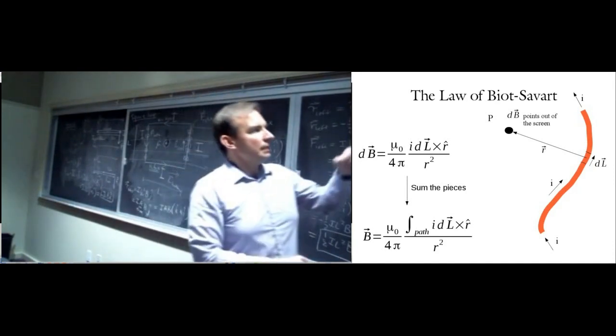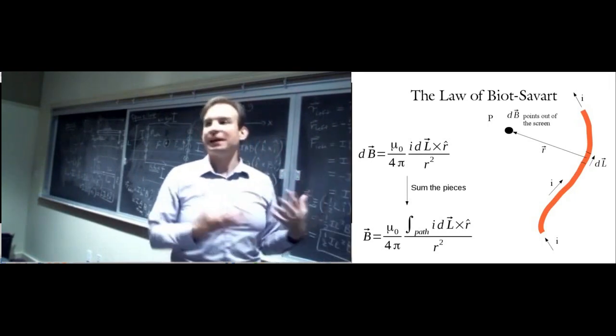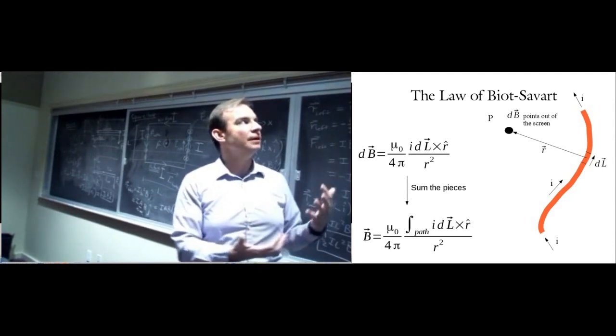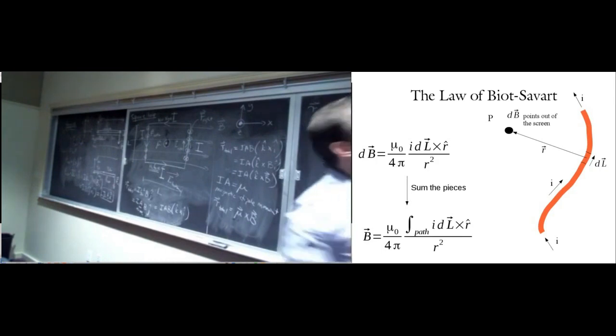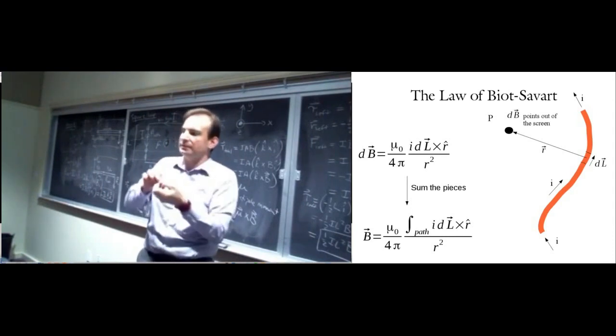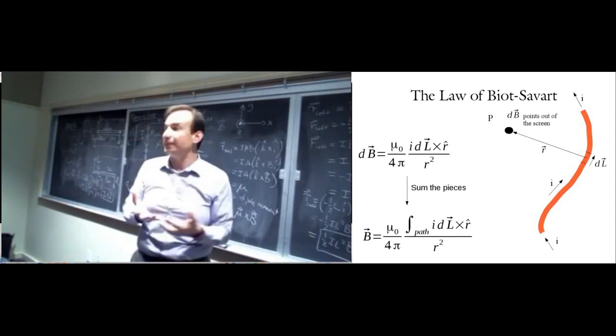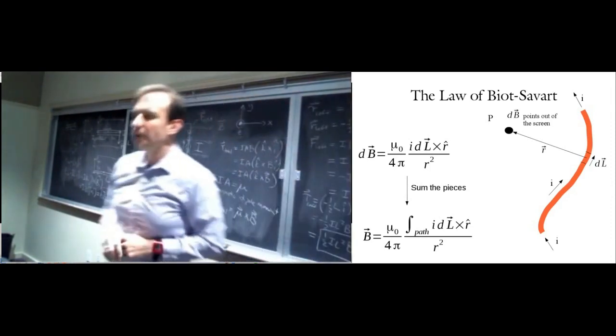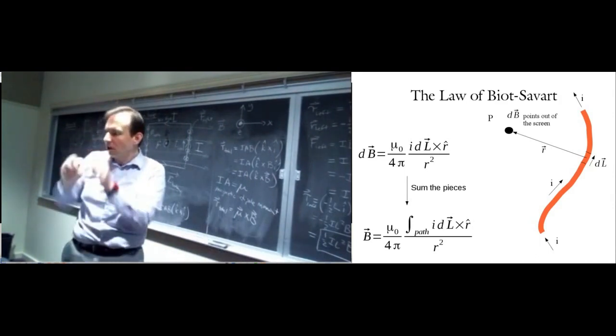Just like Coulomb's law, the Biot-Savart law is the Coulomb's law of magnetism. It tells you that thanks to moving charge — I coulombs per second — you get a magnetic field B. To figure out the magnitude and direction of the field given the current and the length of the conductor, we look at a little piece of the wire called dL vector. That little piece points in the direction the current I is flowing.